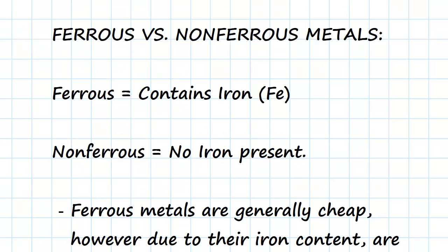First, let's start by defining the difference between a ferrous and a non-ferrous metal. A ferrous metal, by definition, contains the element iron. On the other hand, non-ferrous metals have no iron content.